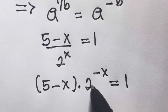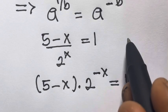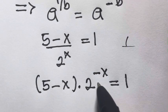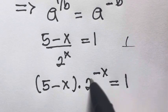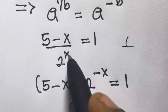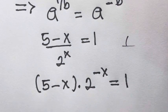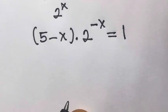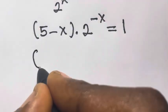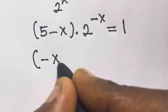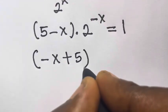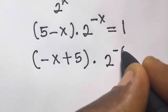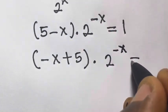Because the negative index means the minus turns to 1 divided by 2 raised to power x, and if we multiply by 5 minus x we get it back. So we can write this as minus x plus 5 times 2 raised to power minus x equals 1.